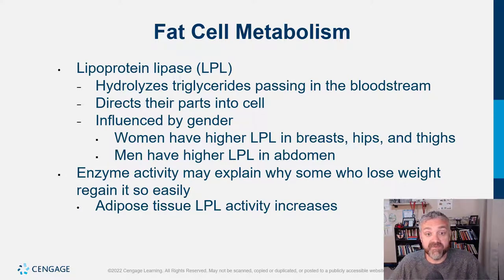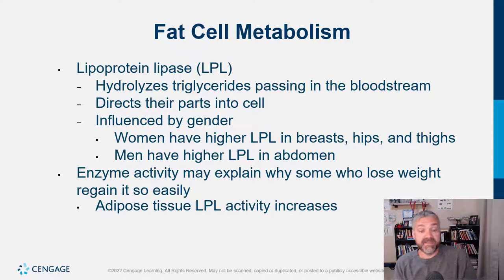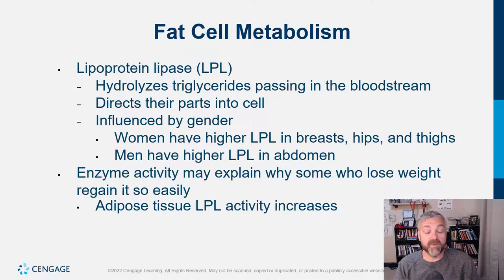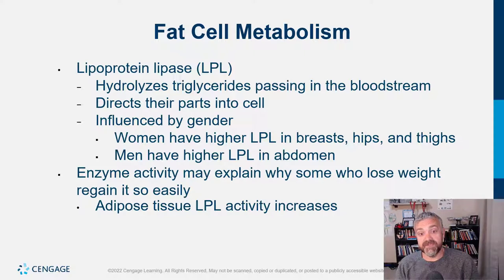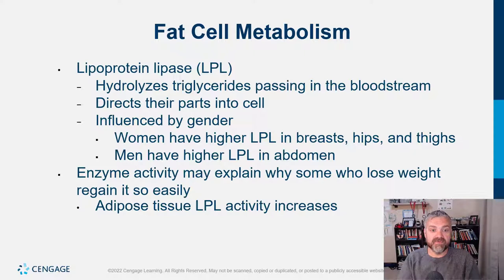Where your body has more of this enzyme is where you gain fat first — that's why we see different fat distribution, especially looking at puberty. As a typical boy becomes a man, body fat levels go down and distribution changes. As a typical girl becomes a woman, body fat levels go up in those areas — breasts, hips, and thighs. So gender plays a big role here.